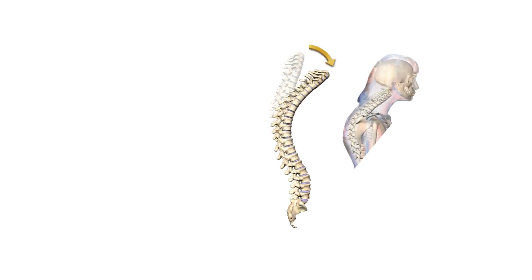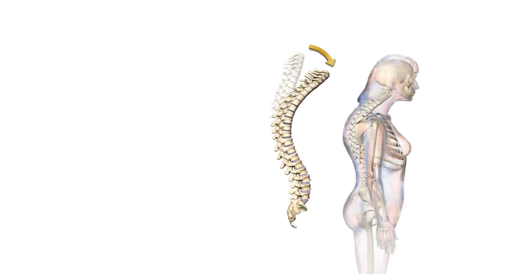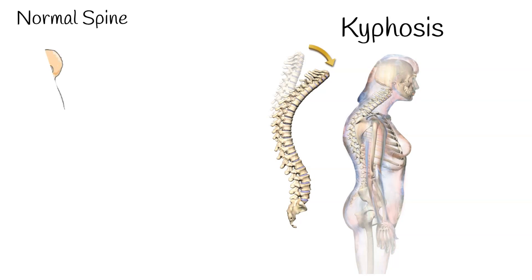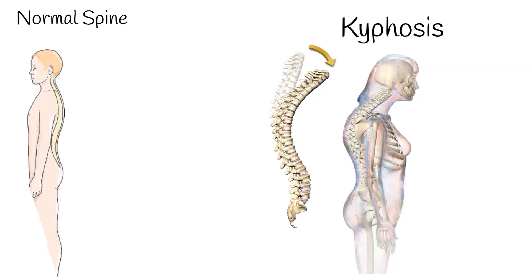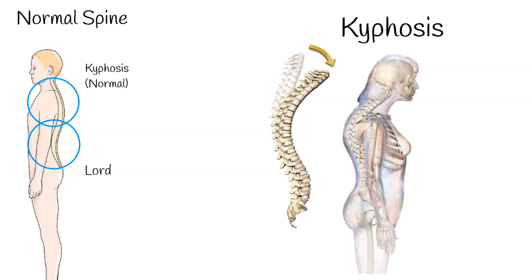Kyphosis is a type of spinal deformity. The human spine consists of vertebrae, and the vertebral column is not straight — it has natural curvatures. The upper part is slightly bent forward, which is called kyphosis, while the lower part of the spine is curved backward, which is called lordosis.